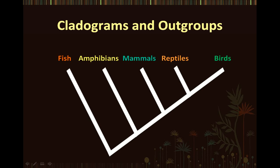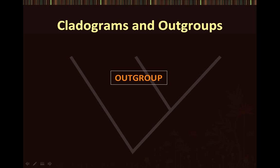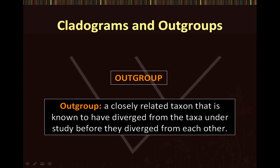Let's discuss what an out-group is. The out-group is a closely related taxon that is known to have diverged from the taxa under study before they diverged from each other. You can think of the out-group as a sort of reference point that we use to compare the taxa that we are studying.